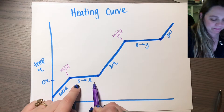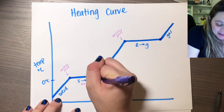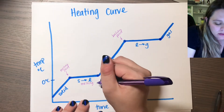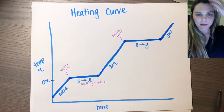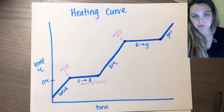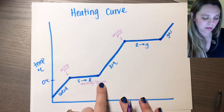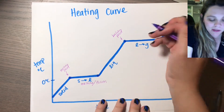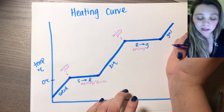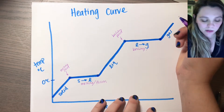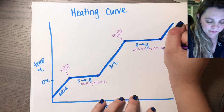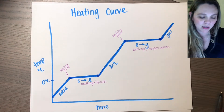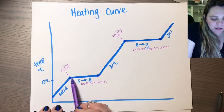Moving from a solid to a liquid — we typically call it melting in real life, like the ice cube melted. But you will also be using the word fusion, so you'll be talking about the delta H of fusion. Don't let it scare you — it's just another word meaning the same step. You're moving between a solid and a liquid when you're talking about fusion. Liquid to gas — we typically talk about this as boiling in real life, but the science-y word we'll use is vaporization. You can think of vapor, like water vapor, a gas. So this stage here is vaporization, this stage here is fusion.